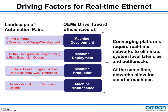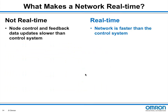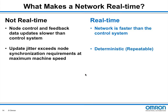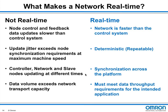The system must keep up in performance even when the integration level goes deeper — performance can't come at the cost of simplicity. A network is not real-time if control and feedback data updates slower than the control system, if update jitter exceeds node synchronization requirements across up to 64 axes, if the controller and slave nodes are updating at different times, or if data volume exceeds the network transport capacity requiring multiple frame transmissions.